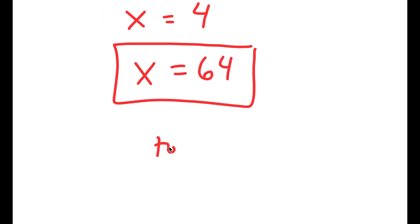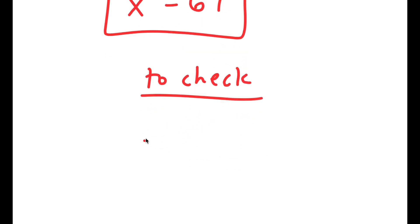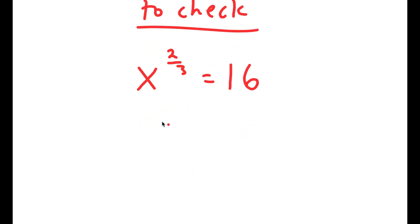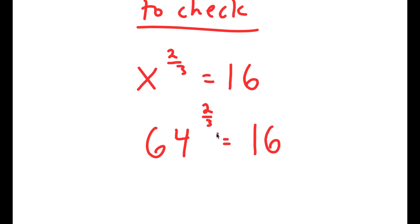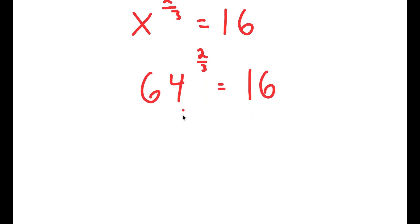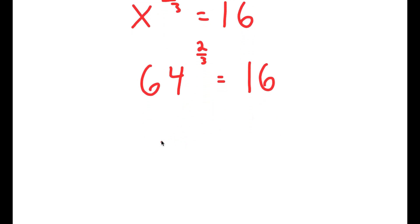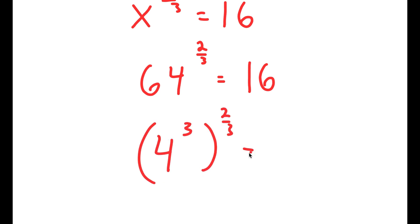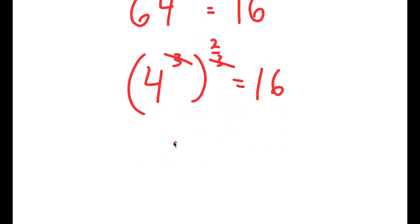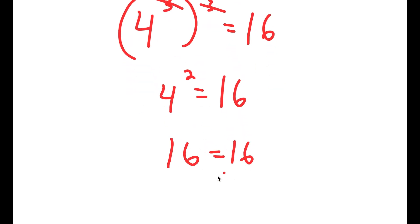Now I'm going to check to see if this is right. My original equation was x to the power of 2 over 3 is equal to 16, and x is 64. So I get 64 to the power of 2 over 3 is equal to 16. Now, 64 is the same thing as 4 to the power of 3. So now I get 4 to the power of 3 to the power of 2 over 3 is equal to 16. These two cancel out, so I get 4 squared is equal to 16. And 4 squared is 16, so I get 16 is equal to 16.